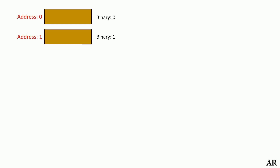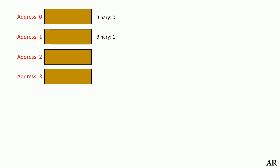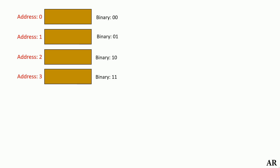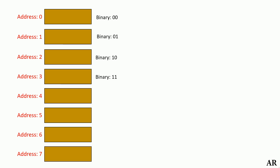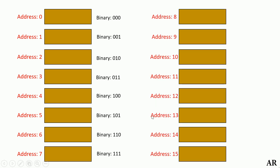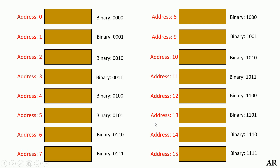Now let us move a step further. Suppose we have 4 benches; the unique addresses are 0, 1, 2, and 3. Converting to binary, we need 2 bits, starting from 00 till 11. Thus, 2 bits are needed. If we extend to 8 benches, it will take 3 bits to represent addresses 0 to 7. And if we extend to 16 benches, we have addresses 0 to 15, requiring 4 bits from 0000 to 1111.